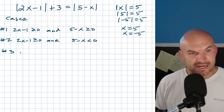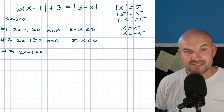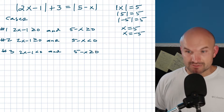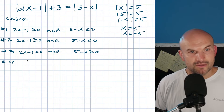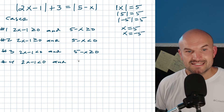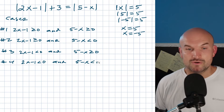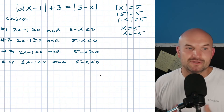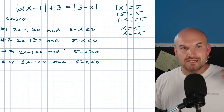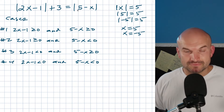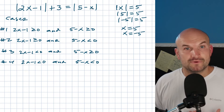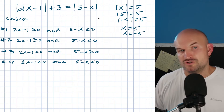Case number three is when 2x minus 1 is less than zero, and 5 minus x is greater than or equal to zero. Case number four is when both are negative: 2x minus 1 is less than zero, and 5 minus x is also less than zero. Remember, when we make something negative or less than zero, we simply negate that value — we take the negative version of that expression.